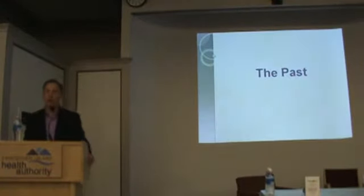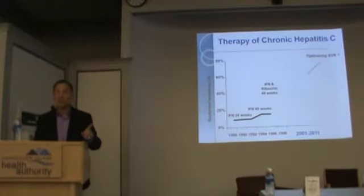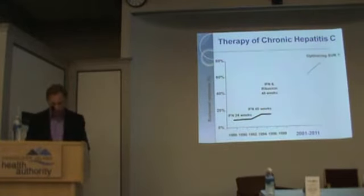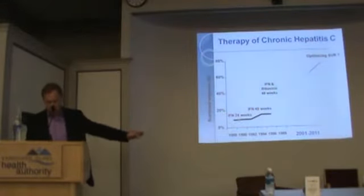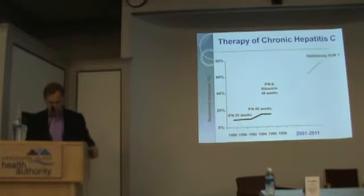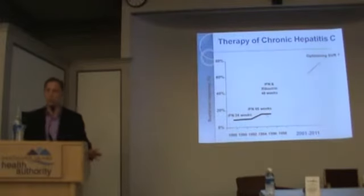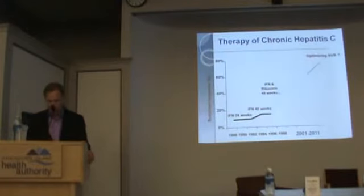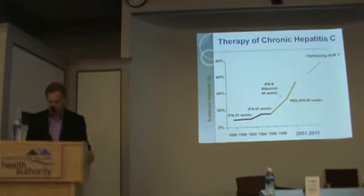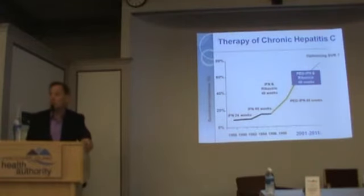Here's the past: what hepatitis C therapy looked like over the past 15 to 18 years. Interferon was the first treatment. I treated patients with interferon for 24 to 48 weeks and the success rate was very poor — around 15%. Then we added ribavirin and the treatment success rate went up. Then we added pegylated interferon around 2001 to 2011 — and for 10 years we were stuck in one spot.